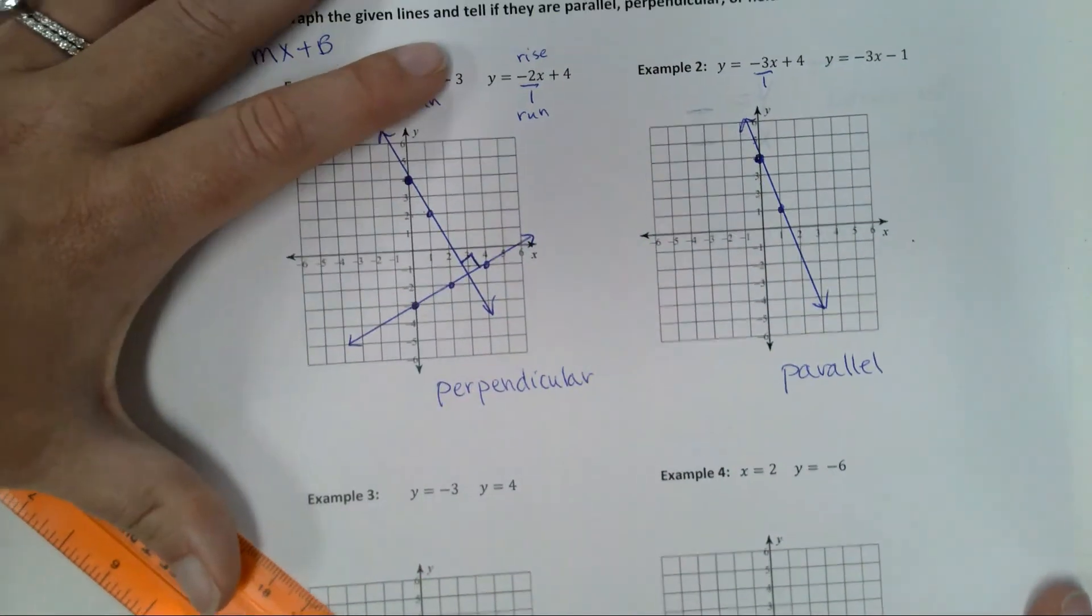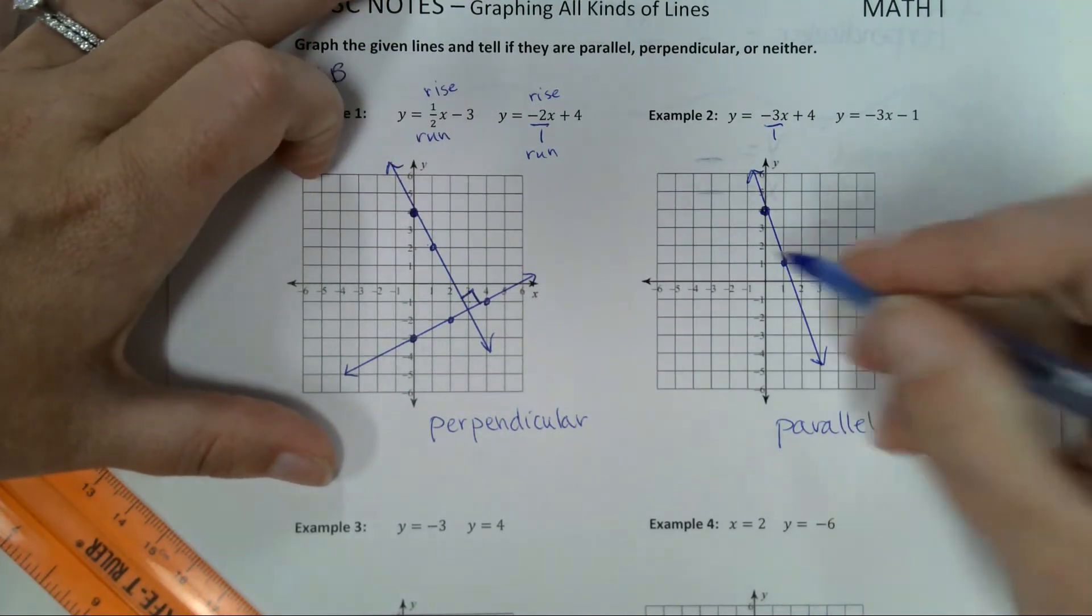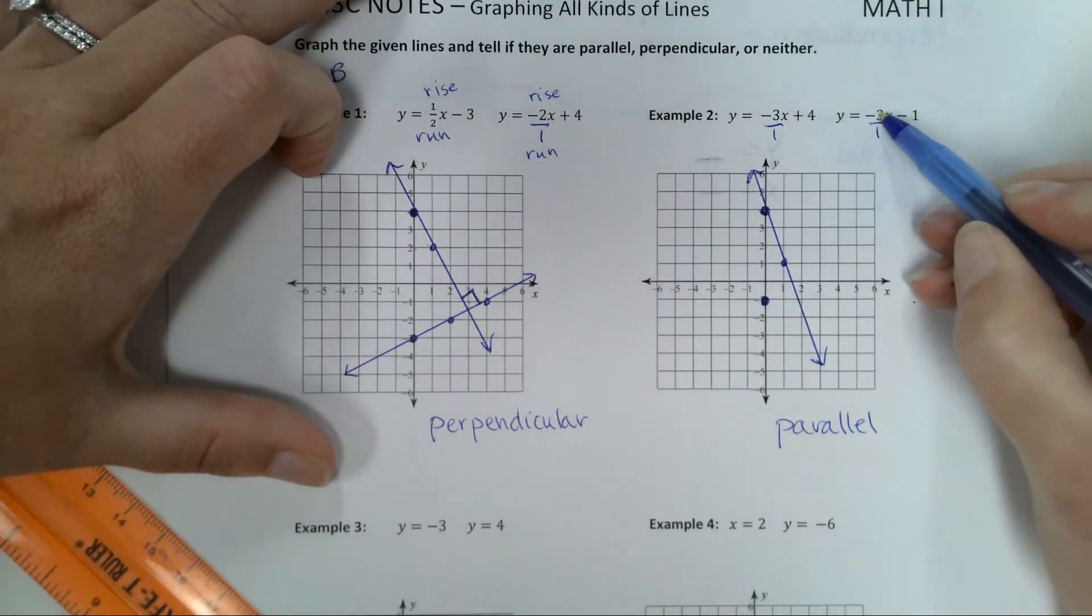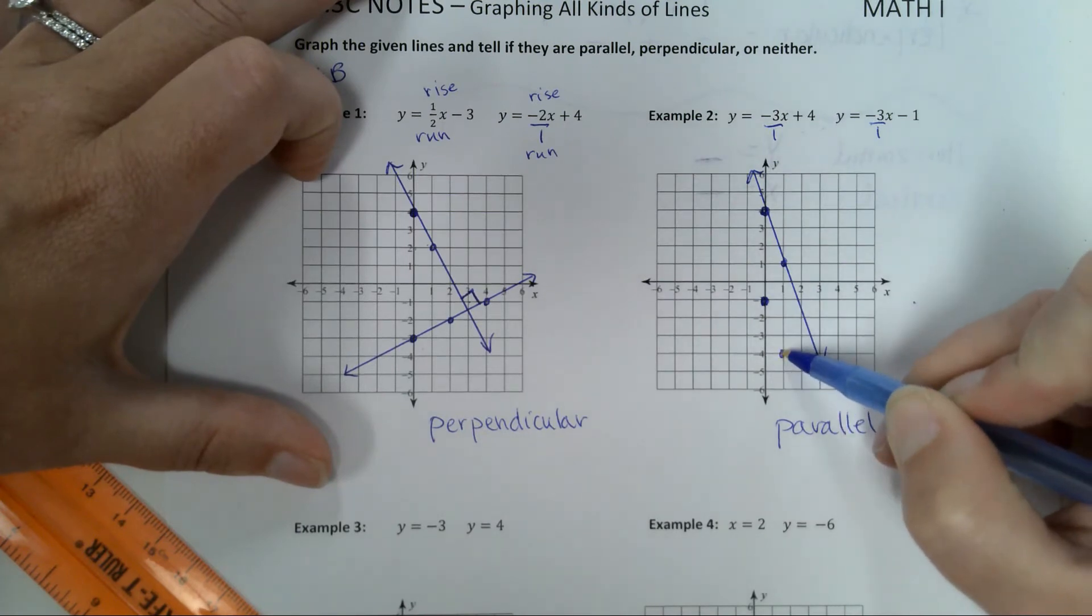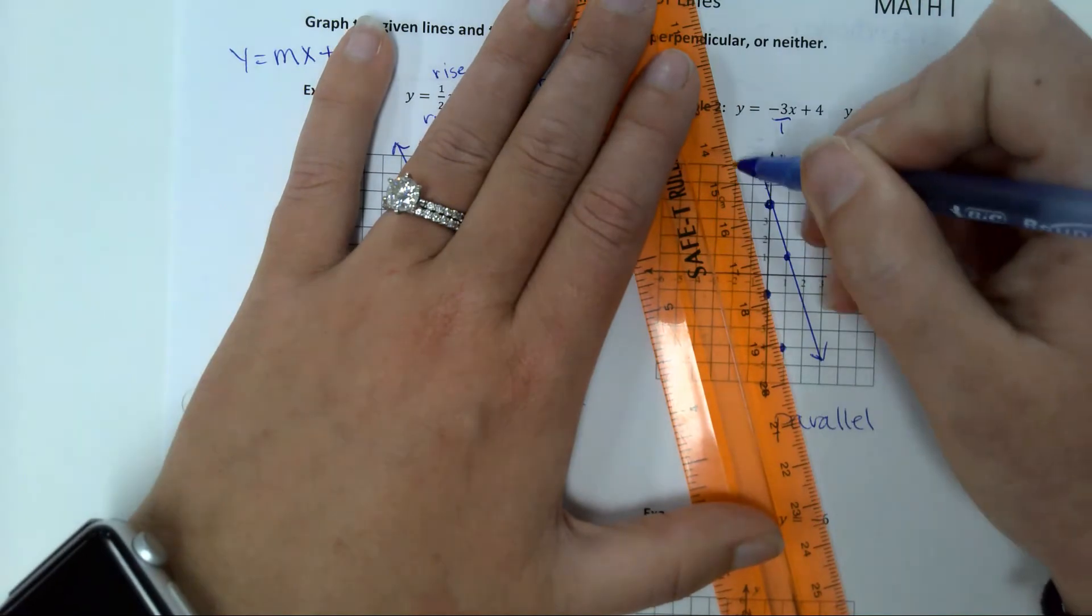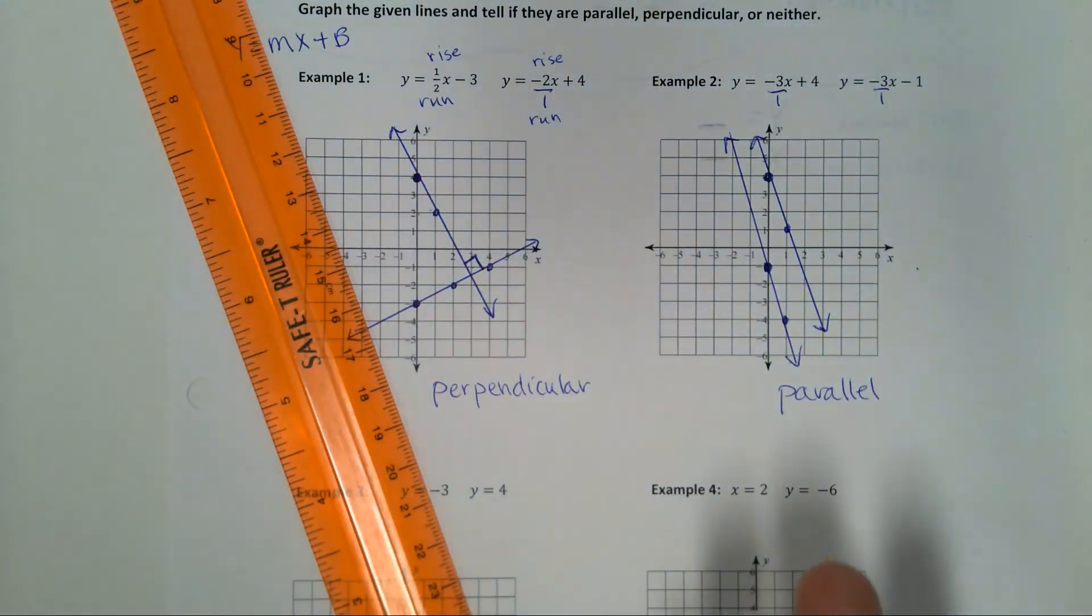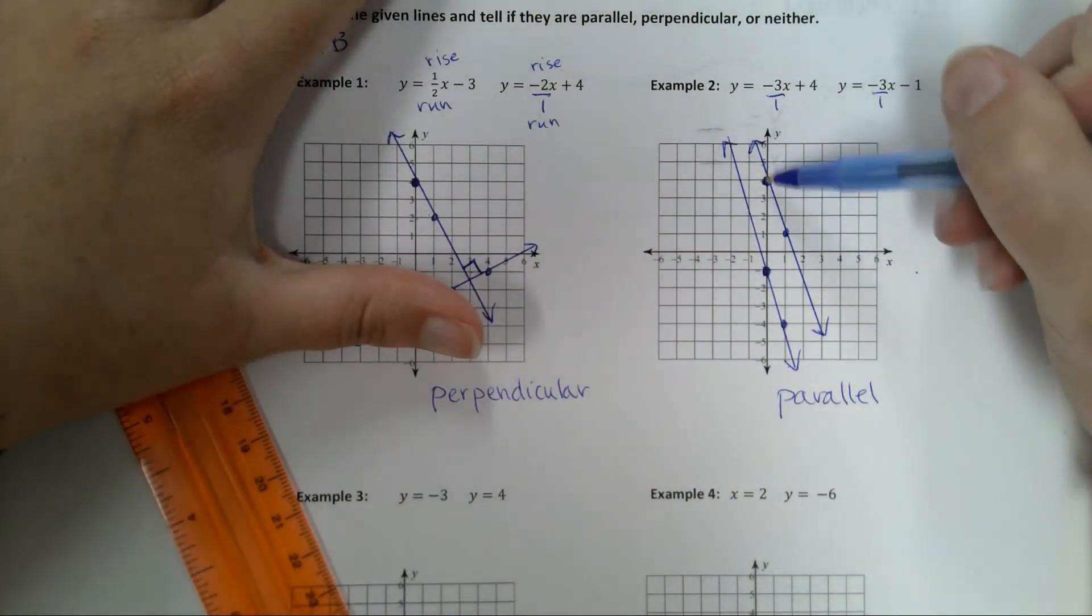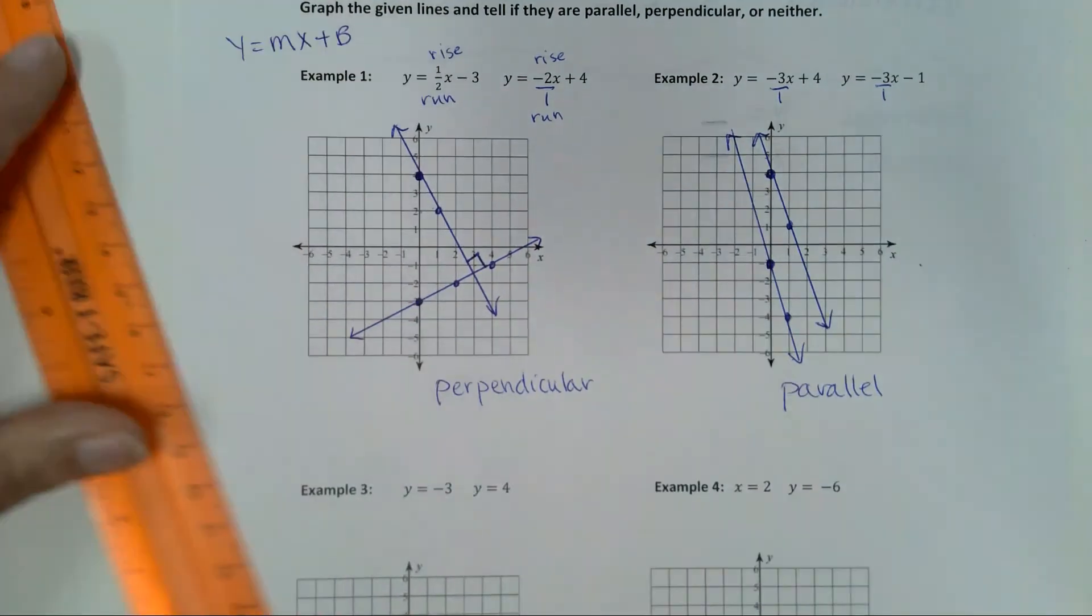For my second line, what's the y-intercept? Negative 1. Very good. And the slope again is down 3 over 1. And there you go. Now, we knew that they were going to be parallel, but do these look parallel? Mine don't look great, but that's because I missed this point above it, and I missed that one. So they don't look great, but they were supposed to be parallel.